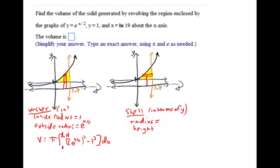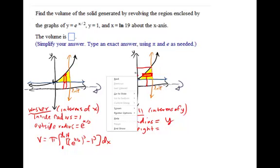And for washer it's in terms of x. So the radius, it's okay to just call it y. And the height is going to be the distance spanned by the rectangle, which would be the natural log of 19 take away this x distance. Ln 19 take away x.